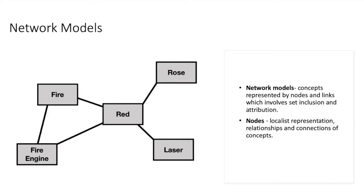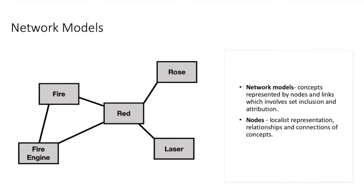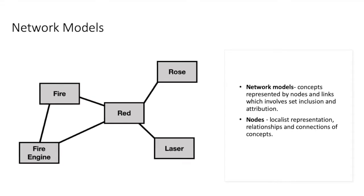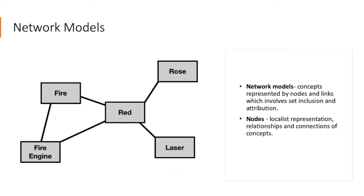Network models are concepts that are represented by nodes and links, which involves set inclusion and attribution. Nodes are localist representations. These are the relationships and connections between concepts.